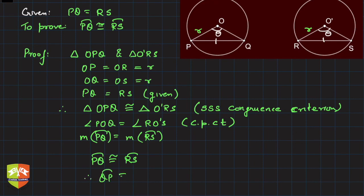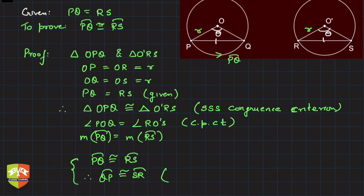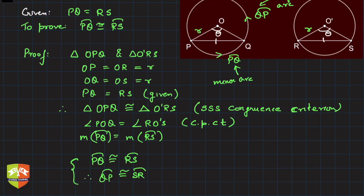Therefore, arc QP will also be congruent to arc SR. In both cases, this is because the circumference minus the minor arc equals the major arc, and if the minor arcs are equal, the major arcs will also be equal. When you go from P to Q anti-clockwise, that is arc PQ — the minor arc. When you go from Q to P the other way, that is arc QP — the major arc. So in both cases, the arcs are congruent.